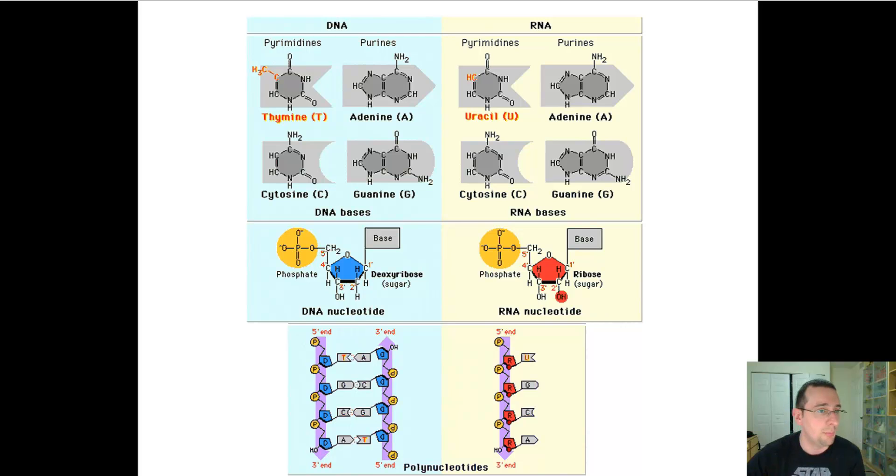Uracil and thymine are very similar. Both are pyrimidines. And by the way, both RNA and DNA have pyrimidines and purines. Purines are always going to be double-ringed. Pyrimidines are always mono-ringed. However, the pyrimidine uracil is different from thymine only slightly, by the lack of a methyl group up here, as you can see in the corner.